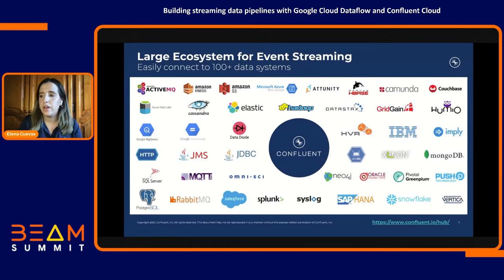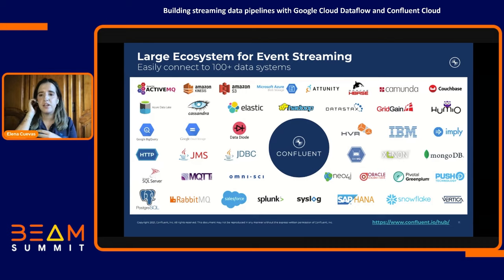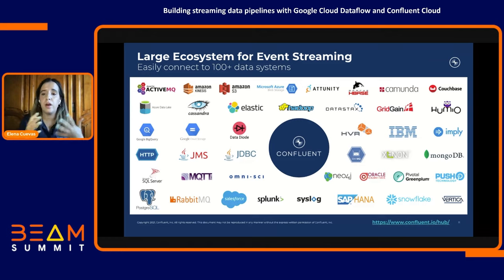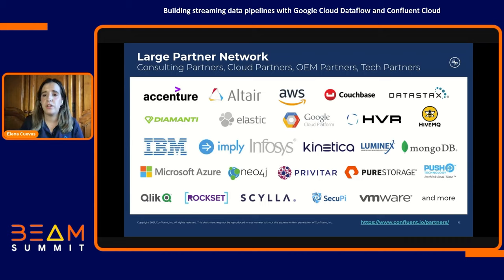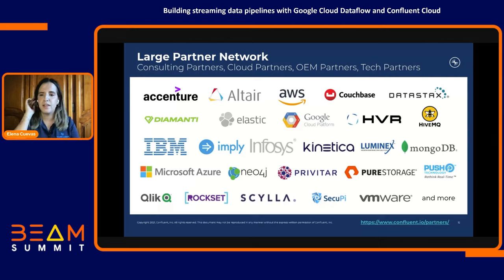We're proud to be part of a large ecosystem of event streaming. One very important dimension is connecting your data that sits in existing systems and databases to the digital nervous system that is Confluent — real-timing your databases and systems. We provide a large number of ready-to-use connectors, both ones we create ourselves and ones built with partners and the Confluent community. Popular systems are covered: MongoDB, Elastic, Google BigQuery, Splunk, and more. We've also built a large network of cloud and technology partnerships, such as the one with Google Cloud I'm highlighting today, enabling integrated billing through marketplaces and covering a large number of use cases.